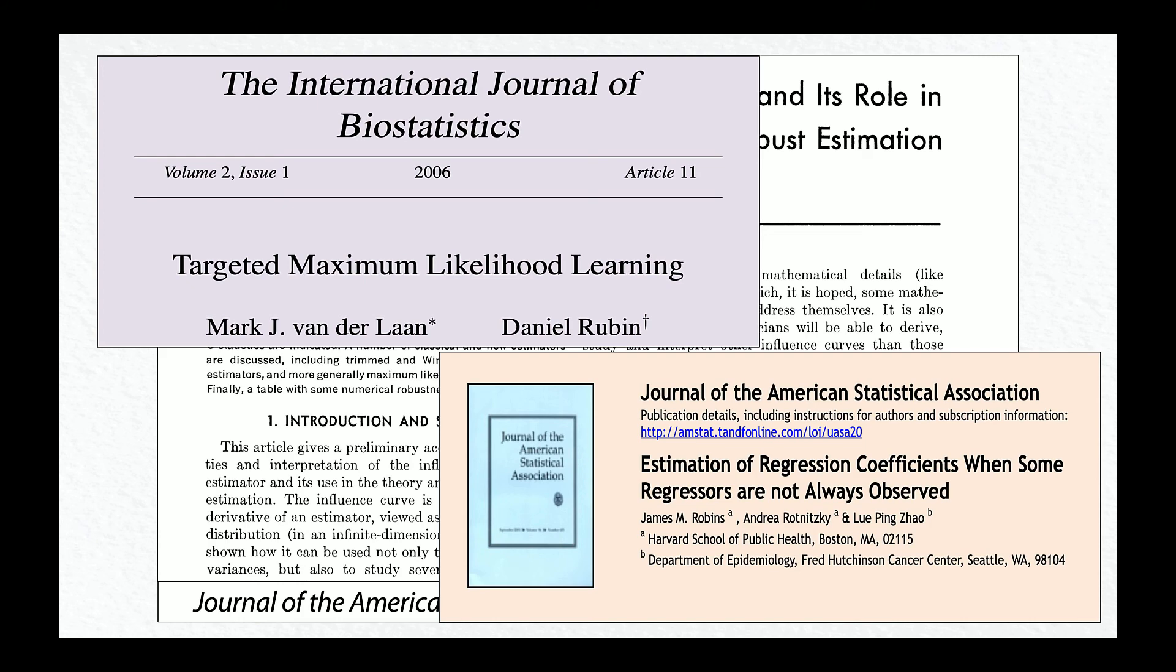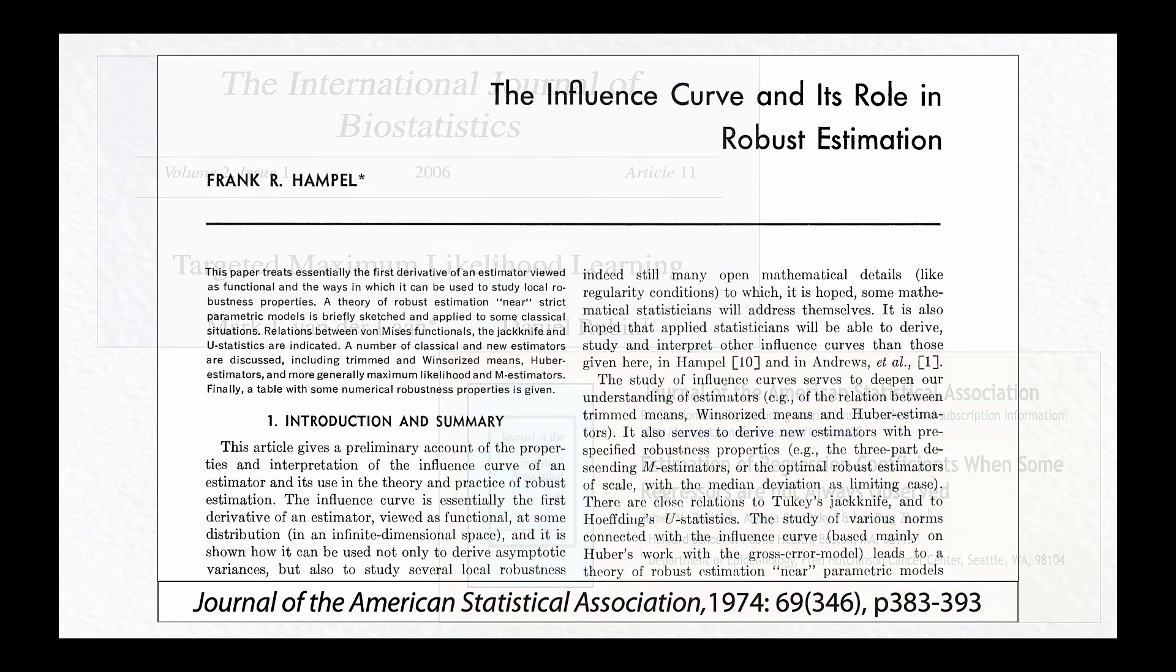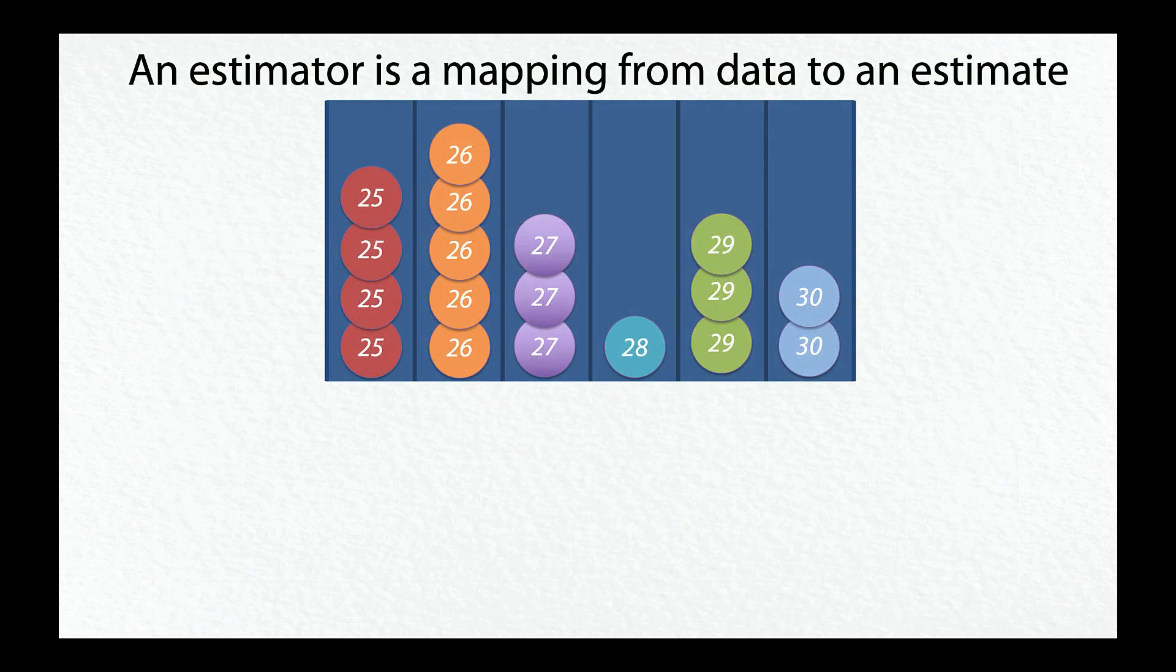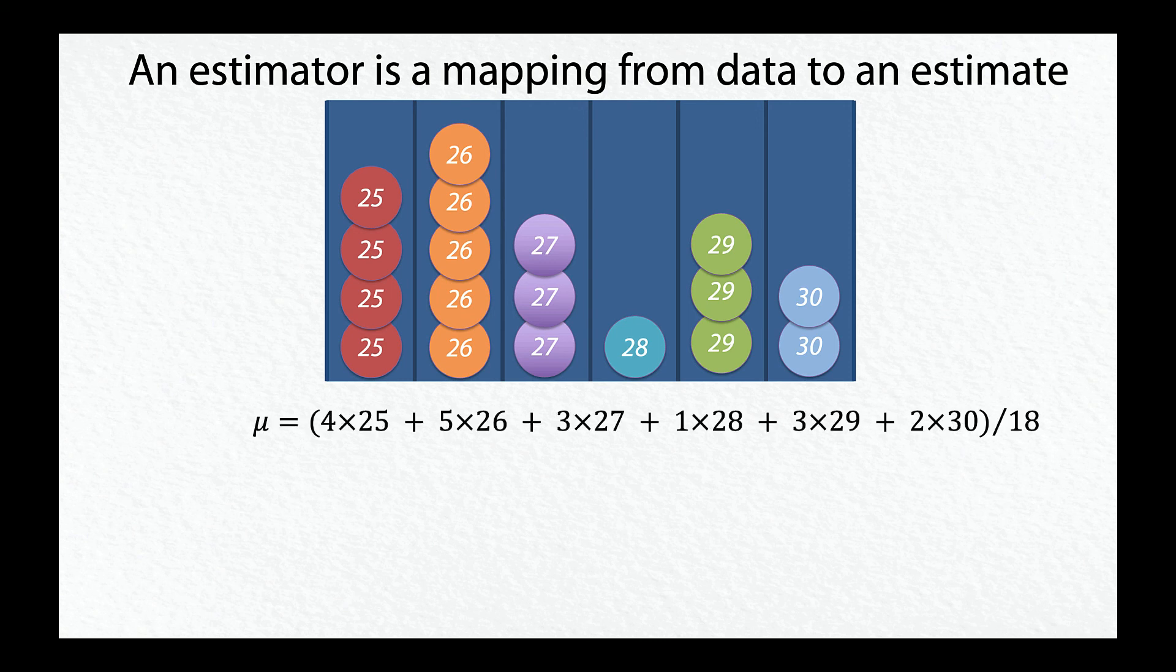In this brief, we'll go over Hample's example of the influence curve of an estimator of the mean. An estimator is a mapping from data to a value. For example, the data here consists of 18 values between 25 and 30. We can find the mean by adding up the values and dividing by 18. This procedure is our estimator, t.